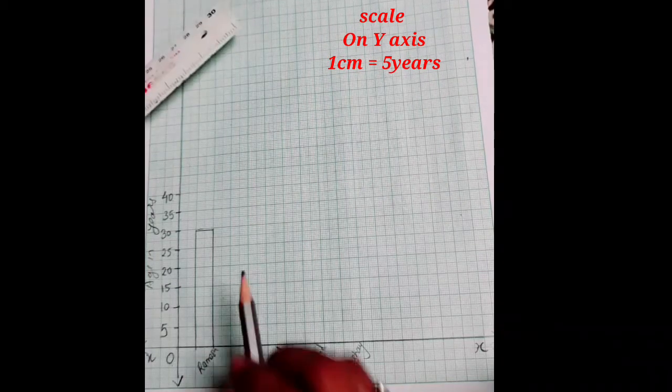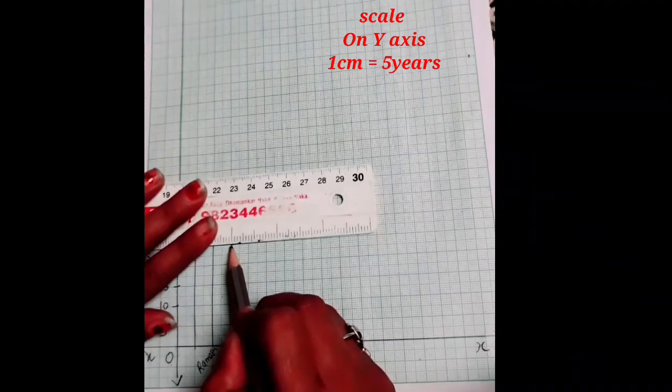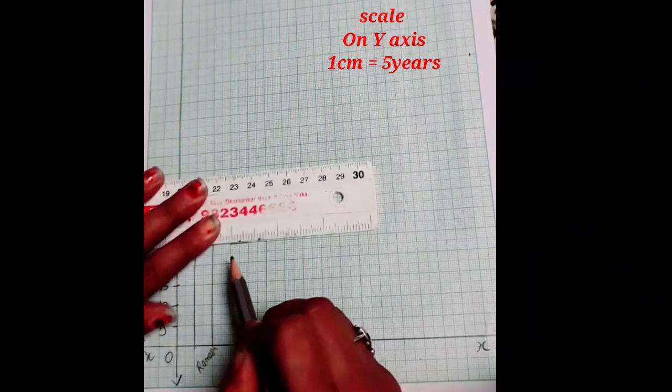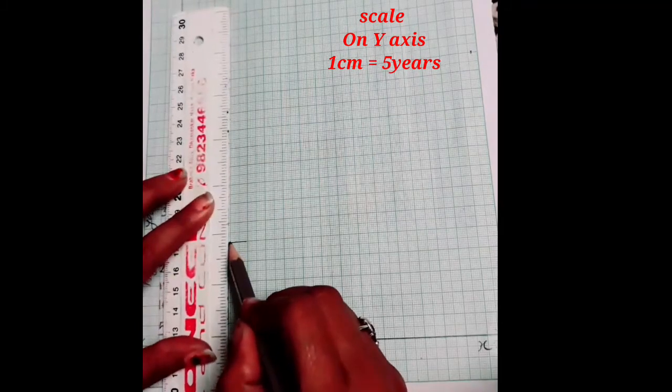After that Mohan is given 25 years. Means Mohan age is 25. So 25 is here. We will mark over here 25.